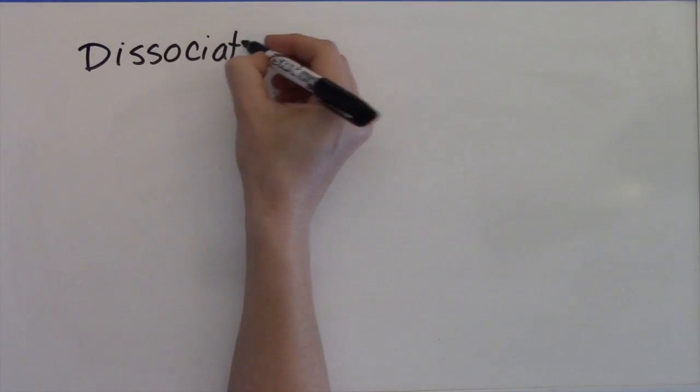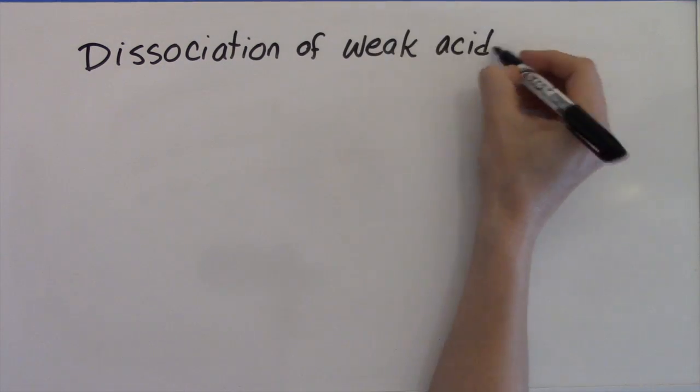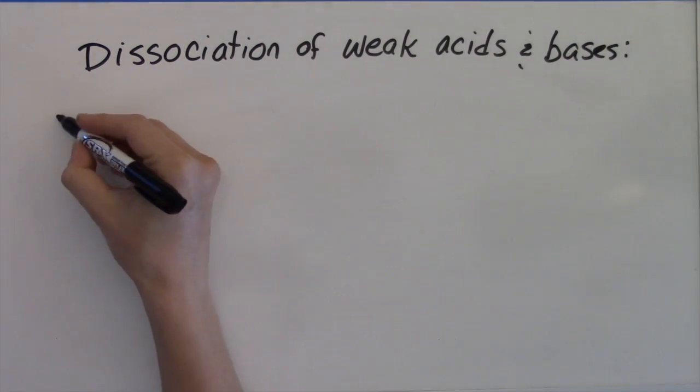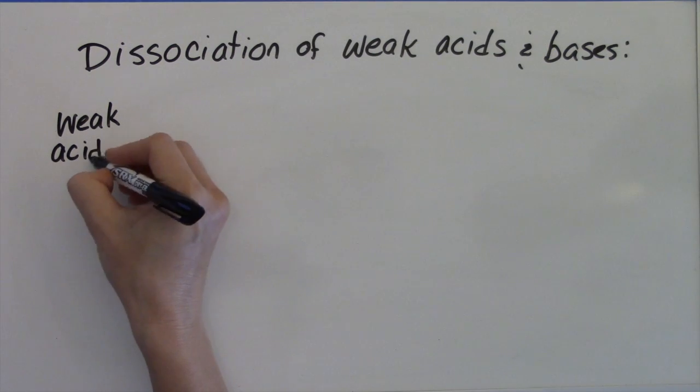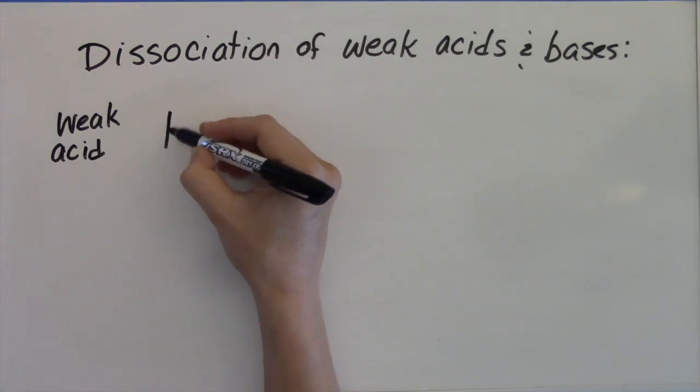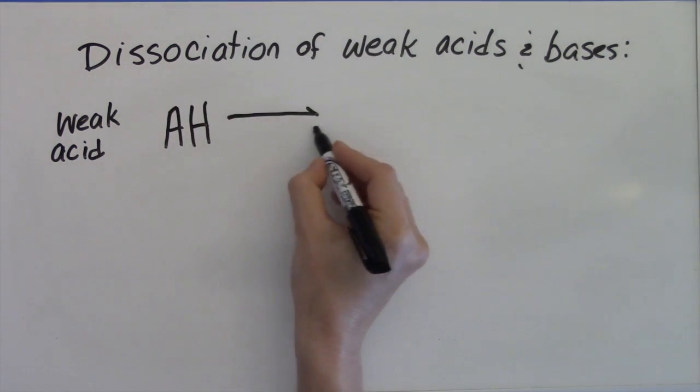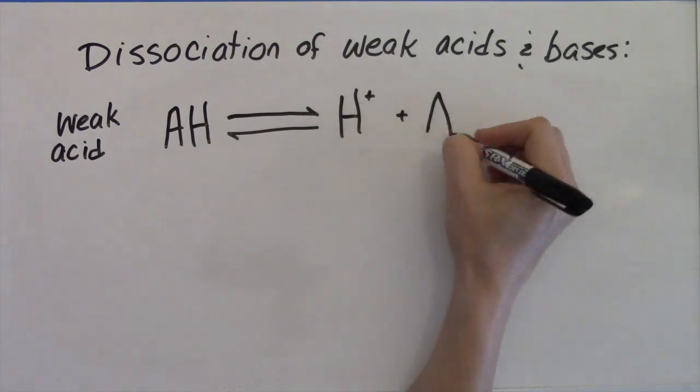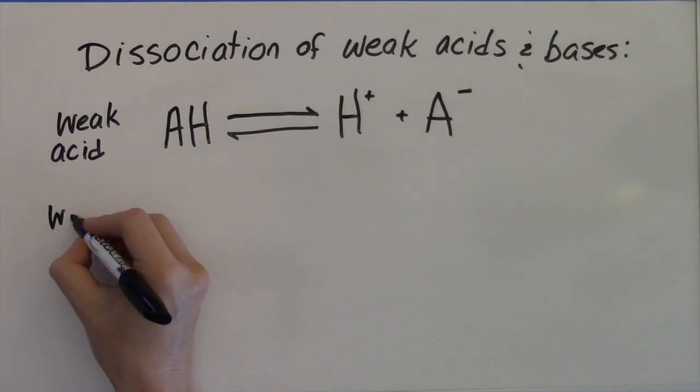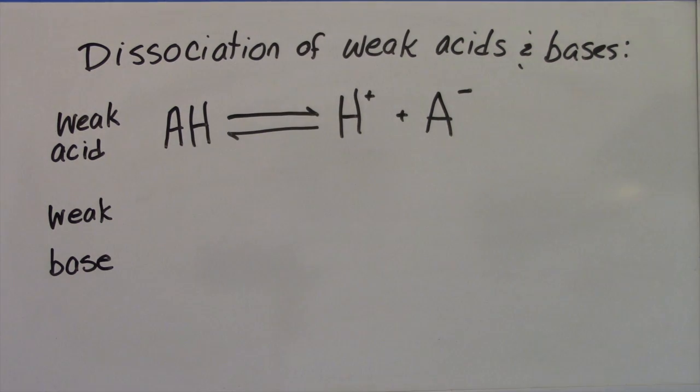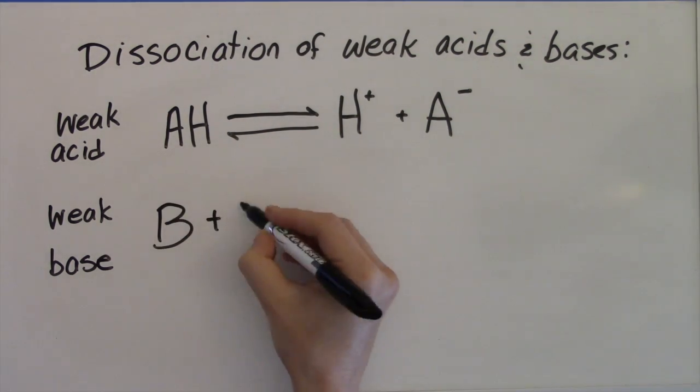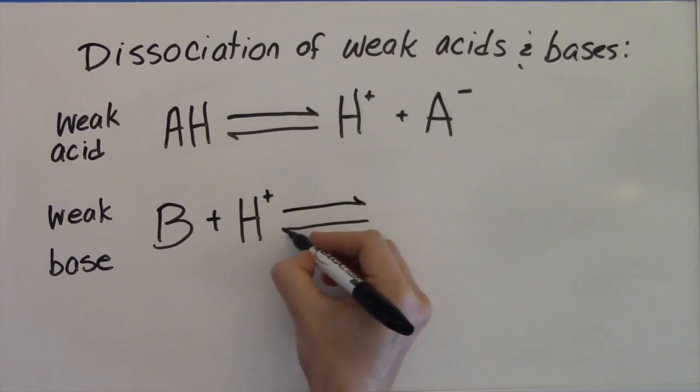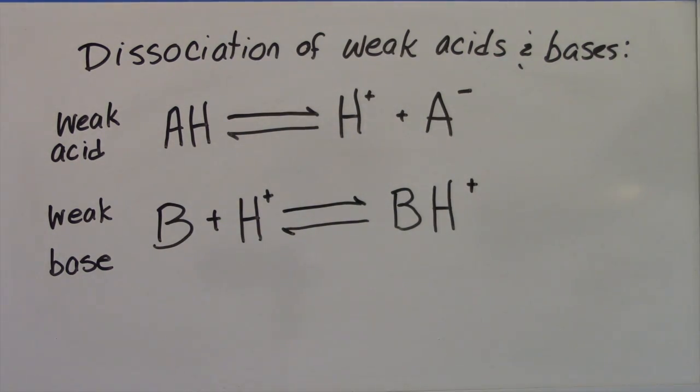Here are the dissociation equations for weak acids and weak bases. A weak acid in its uncharged form is able to dissociate to release H-plus ions, and it becomes negatively charged itself. A weak base in its uncharged form is able to accept a hydrogen H-plus ion, and it then becomes positively charged.